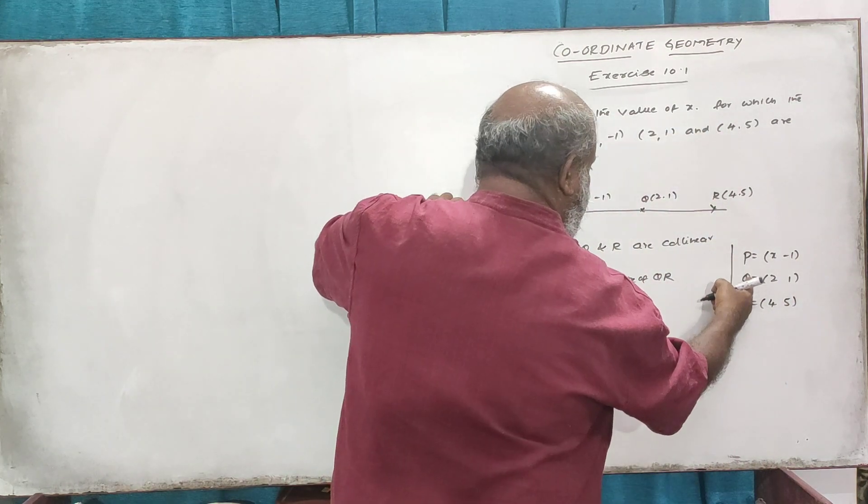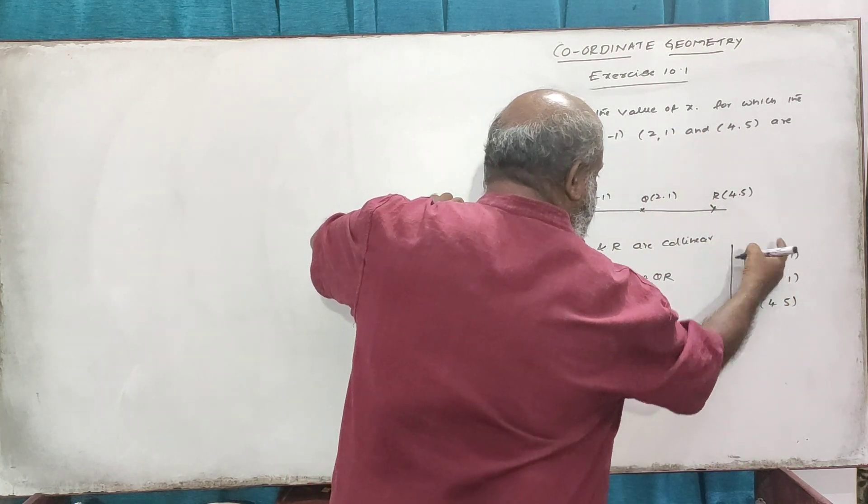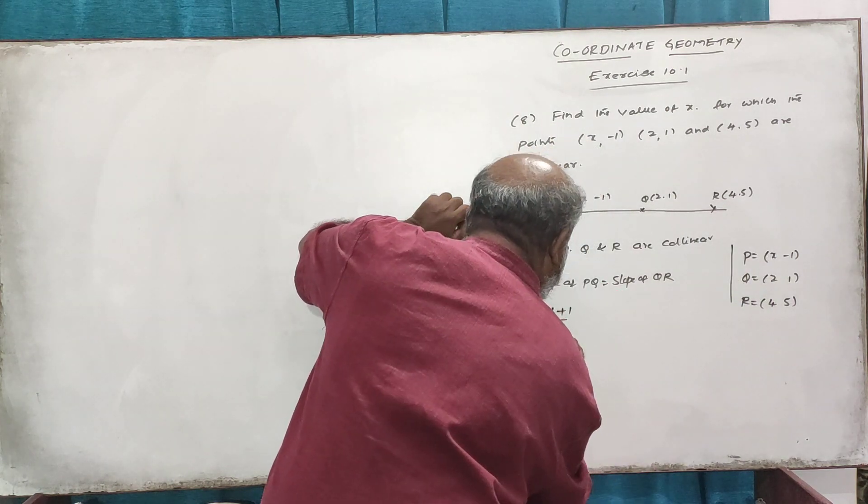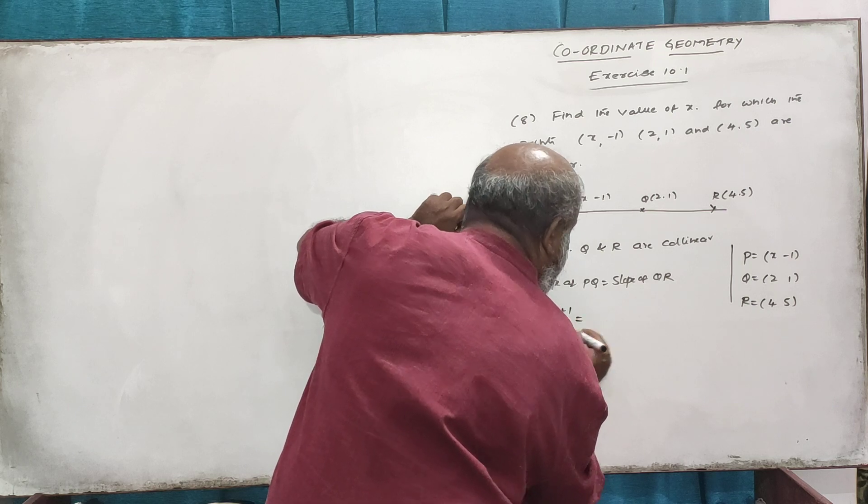The slope of PQ, we calculate: 1 plus 1, divided by 2 minus x. That gives us 2 over 2 minus x.